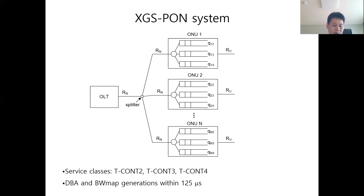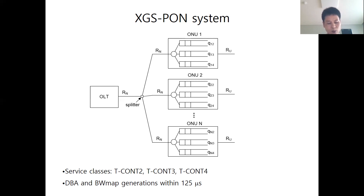Therefore, only one ONU can use the uplink bandwidth at a time. The OLT receives a request from each ONU, performs dynamic bandwidth allocation or DBA to determine the uplink transmission time without duplication for each ONU, and then delivers the result to each ONU. All operations of XGS-PON are synchronized with unit time. In the XGS-PON system, the unit time is fixed at 125 microseconds. It executes DBA every unit time, stores the results in BWMAP or bandwidth map, and transmits the BWMAP to each ONU at the end of each unit time. Since all operations are synchronized with the unit time, the sum of transmission time allocated by the DBA is also less than the unit time.